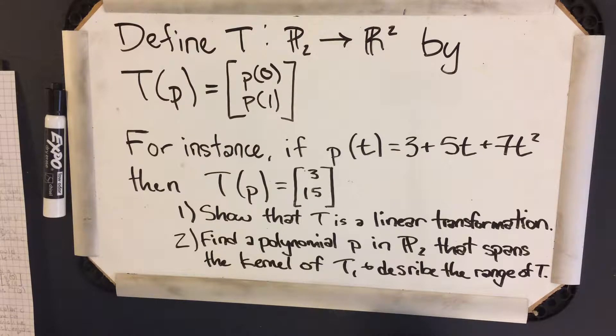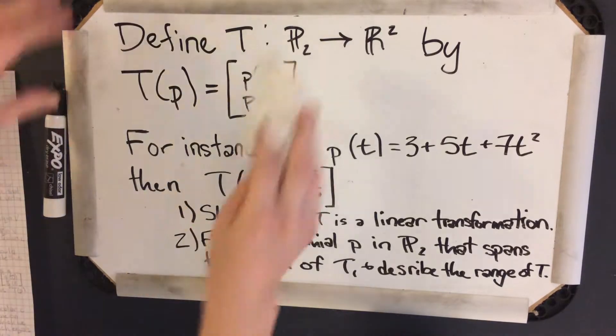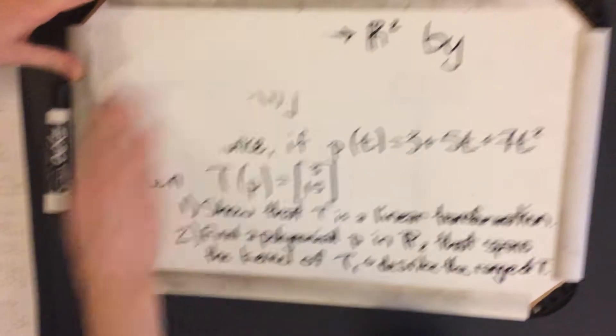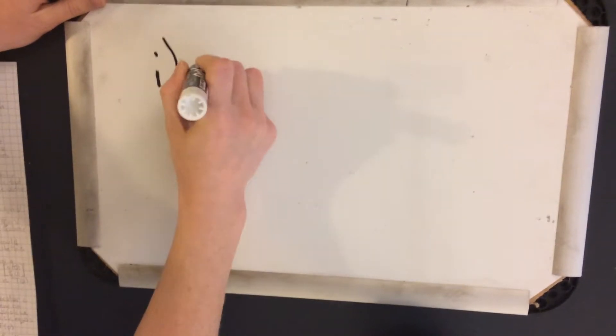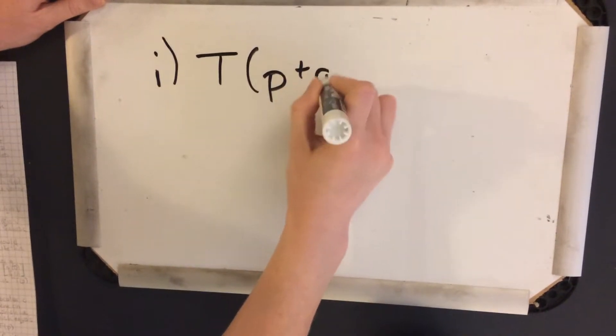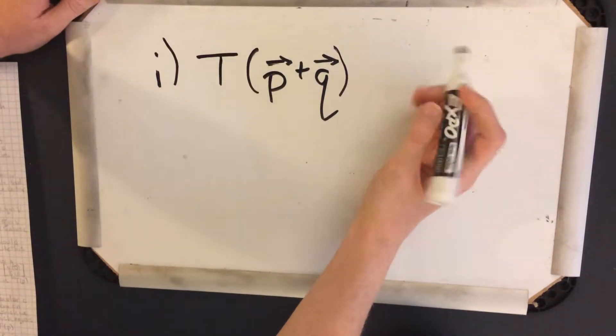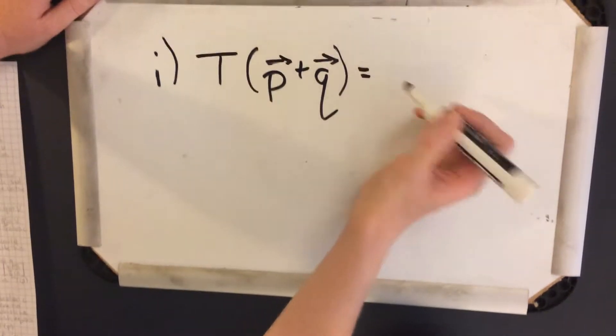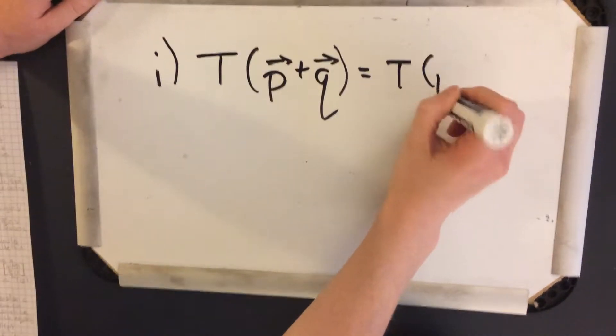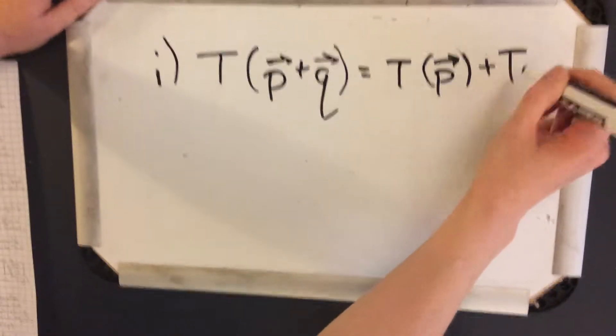A linear transformation T from a vector space V into a vector space W is a rule that assigns to each vector x in V a unique vector T(x) in W, such that T(p+q), and p and q being these vectors in V, for all vectors p, q, and V. And this should equal the transformation of p plus the transformation of q.